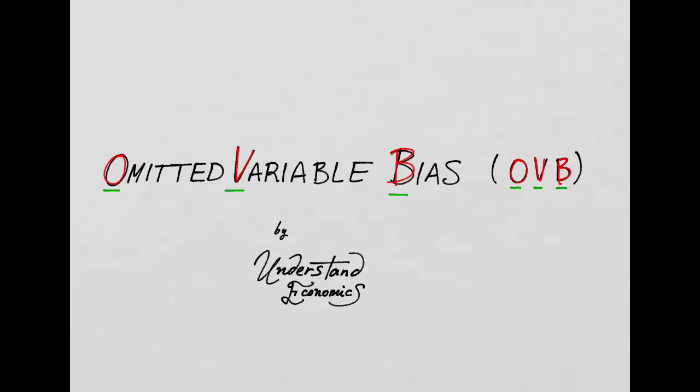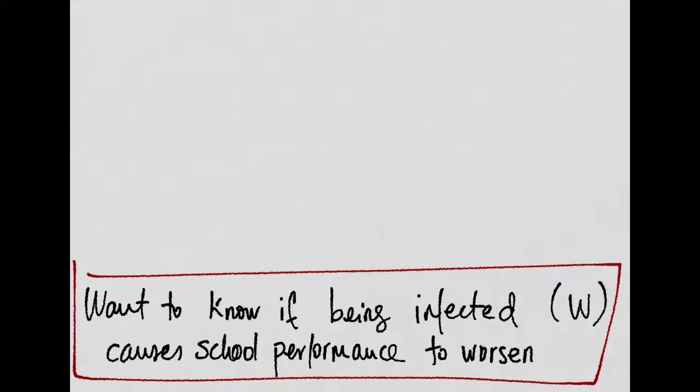Hi, welcome to this video on omitted variable bias. Imagine that we want to know if having certain type of infection or disease causes school performance to worsen.